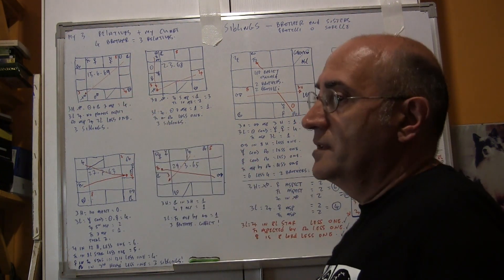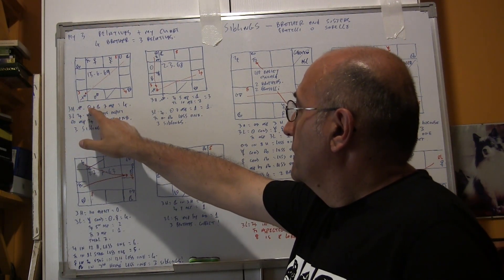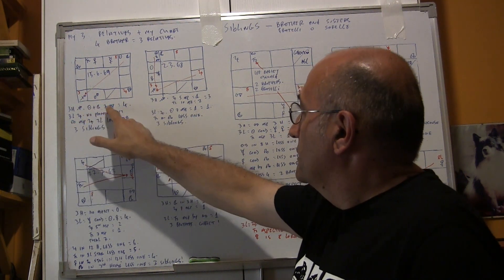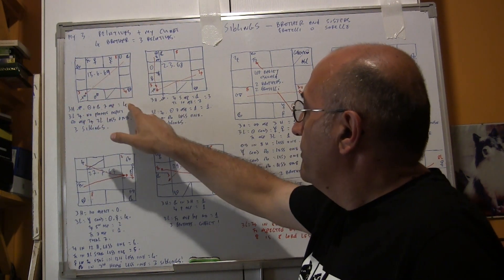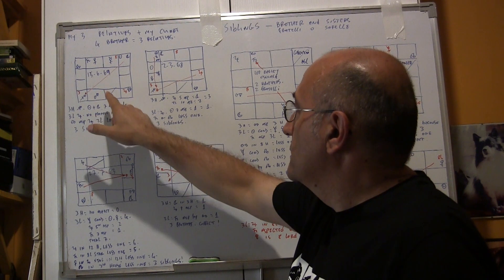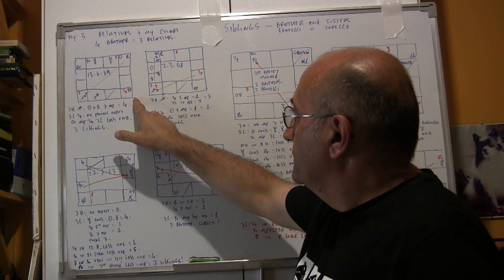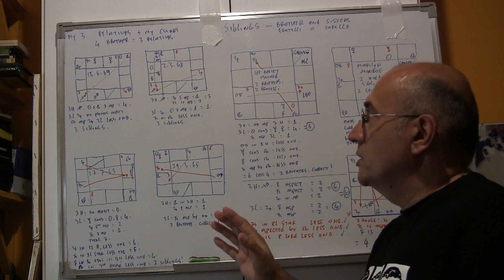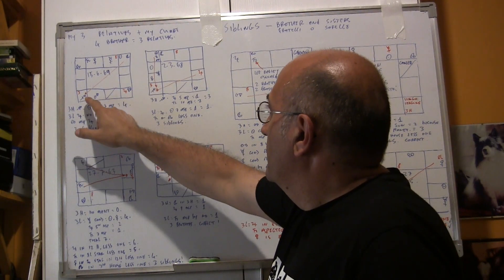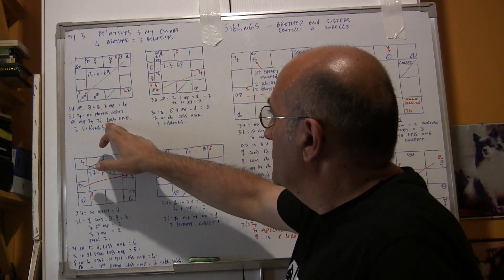Now we go to my smaller brother's chart. He has Libra ascendant and the third house is Sagittarius. The Sun and Moon in Gemini aspect the third house, and as they are in a dual sign they give two each — so four relatives. The third lord is Jupiter and no one aspects Jupiter, so he shows four relatives. Rahu is aspecting Jupiter, so less one. Four less one is three — correct.